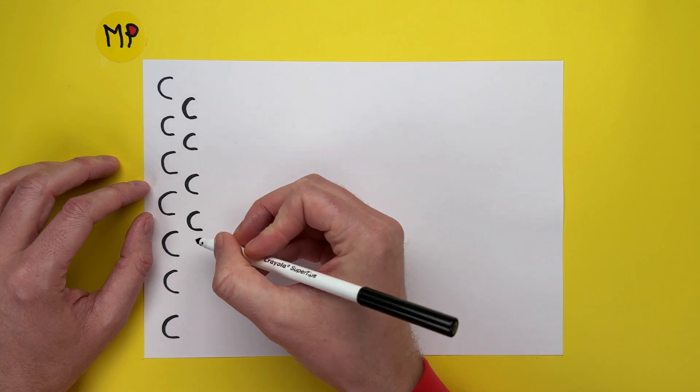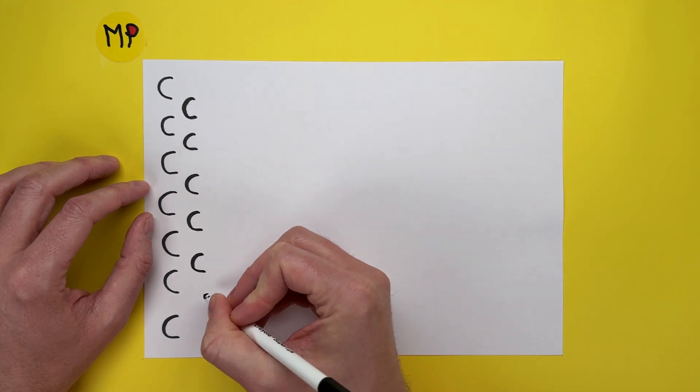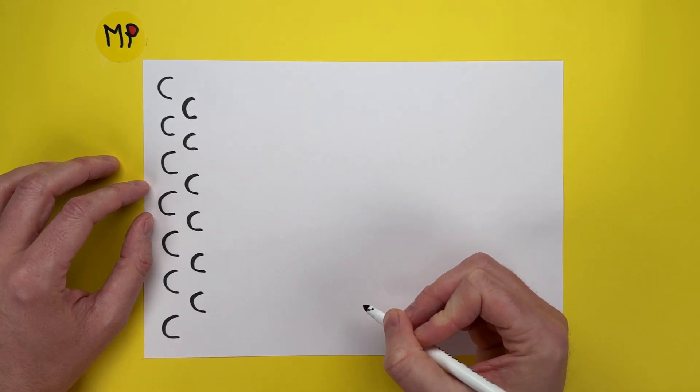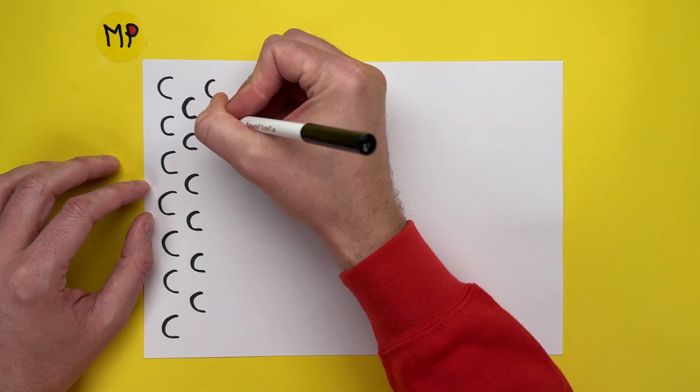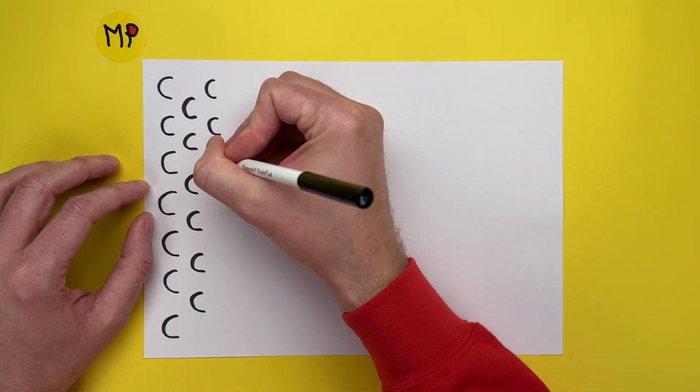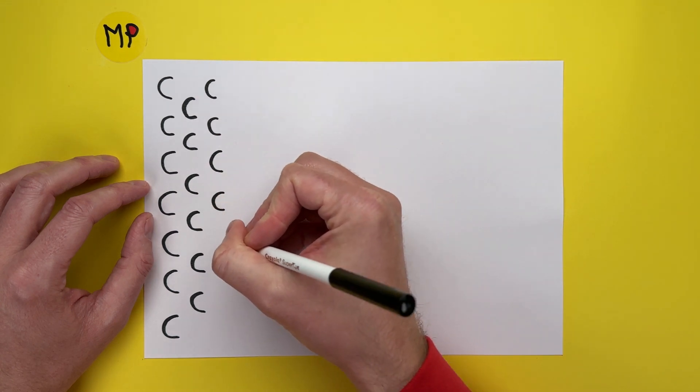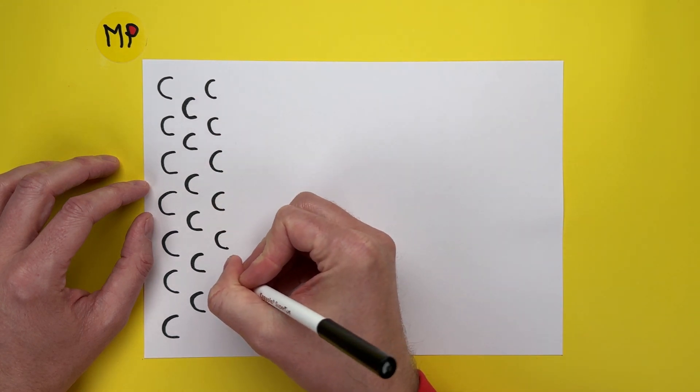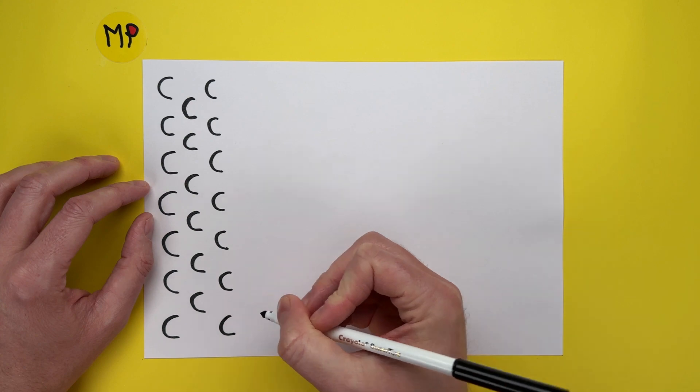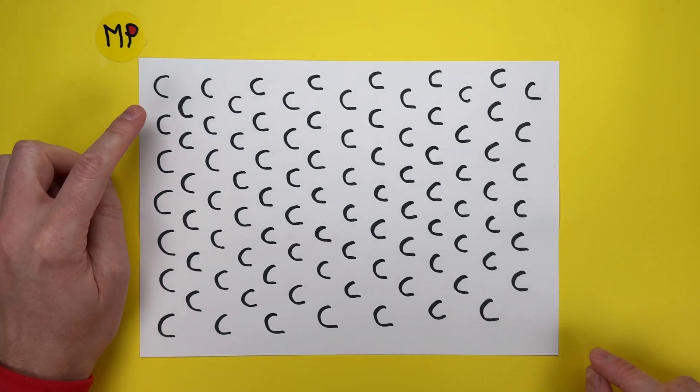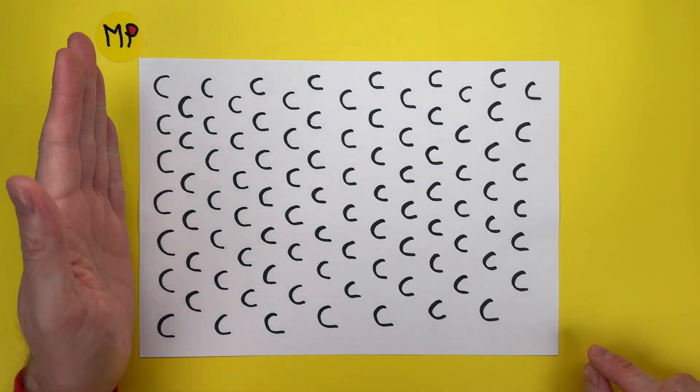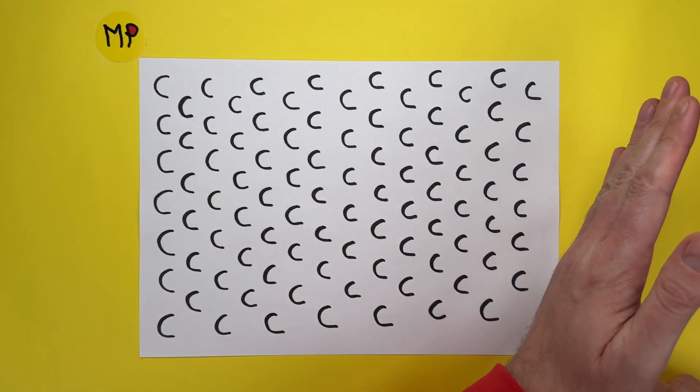So again, don't worry about it too much if it's not perfect. I'm going to go back to the top and again we're going to go roughly in those gaps. And we're just going to do that all the way, so sort of back and forth. And I'm going to link up these C's from one side of the picture to the other.